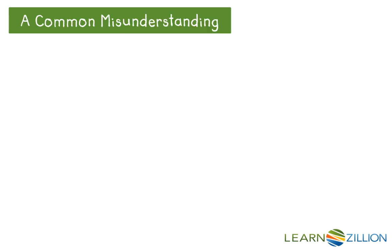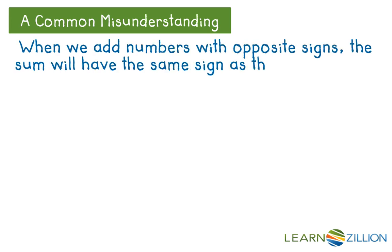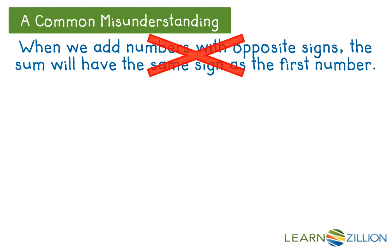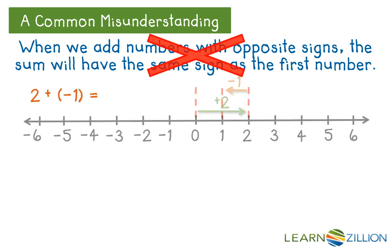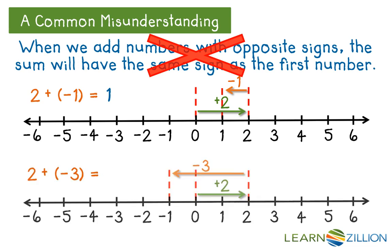A mistake that many students make when they don't use a number line is to think that when we add numbers with opposite signs, the sum will have the same sign as the first number. However, this is not necessarily the case. When we add 2 plus negative 1, the answer is indeed a positive number. However, when we add 2 plus negative 3, the answer is negative.